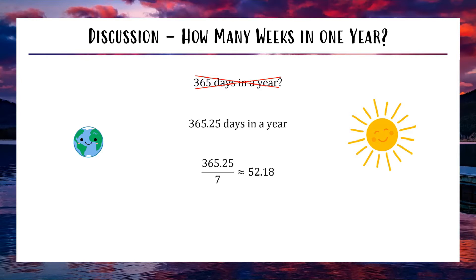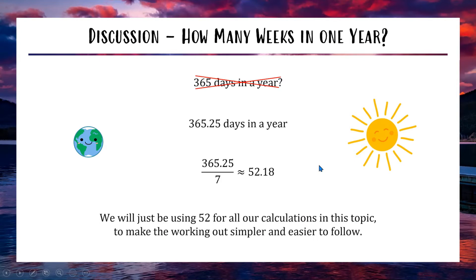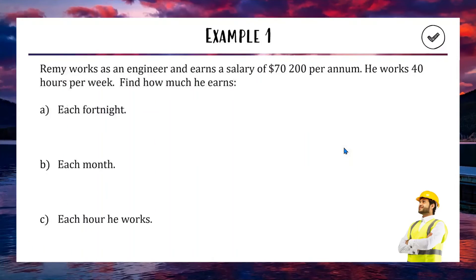However, using 52.18 makes the working out messier with a lot of decimals and rounding. So in the interest of simplicity, for this entire topic I'm going to use 52 as the number of weeks in a year to keep things nice and easy to follow — it's slightly less accurate but that's fine. Example one: Remy works as an engineer earning a salary of $70,200 per annum — per annum is Latin for every year. He works 40 hours per week. Find how much he earns each fortnight, each month, and each hour he works.